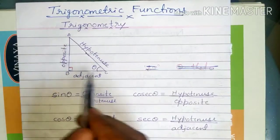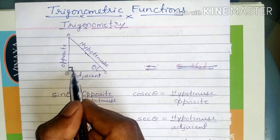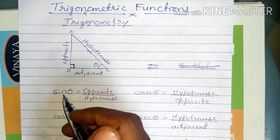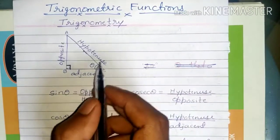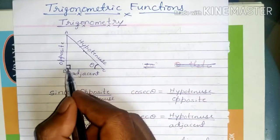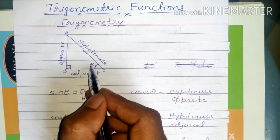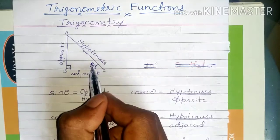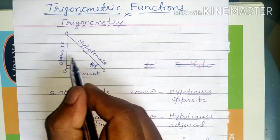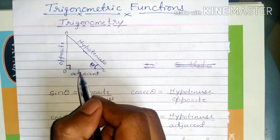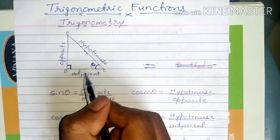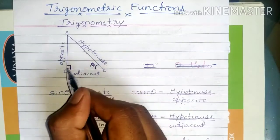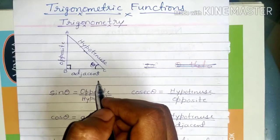If you consider a right angle triangle — that means one angle is equal to 90 degrees — the other two angles may be any measure. Whenever you consider some angle other than 90 degrees, we represent it by theta or any other symbol. With respect to this angle theta, the side which is opposite is called the opposite side, the side which is adjacent is called the adjacent side, and since the third side is opposite to 90 degrees, it is called the hypotenuse.